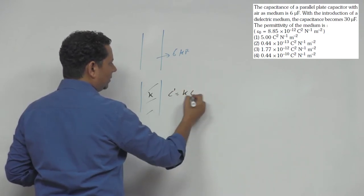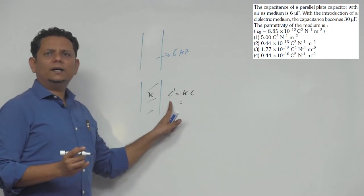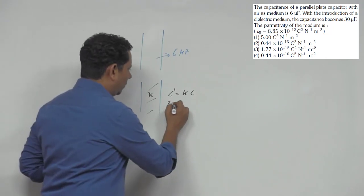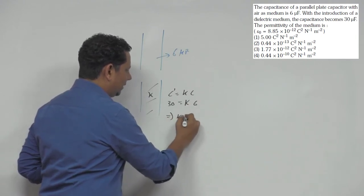k times c dash will be equal to k times c और जो नई value है वो हो गई आपकी 30, और original value थी 6. So 30 = k times 6, which implies आपकी k की value आ गई 5.